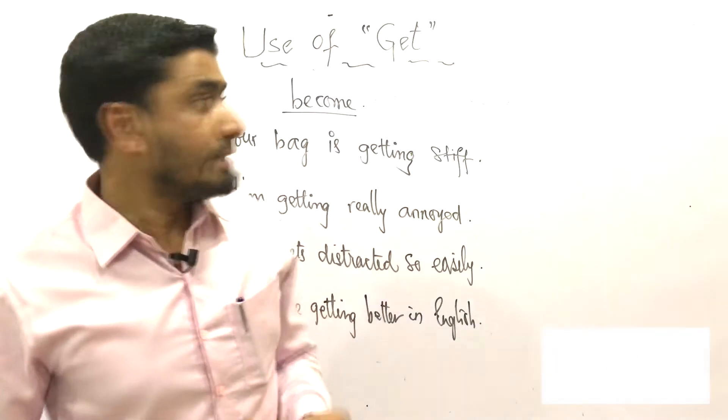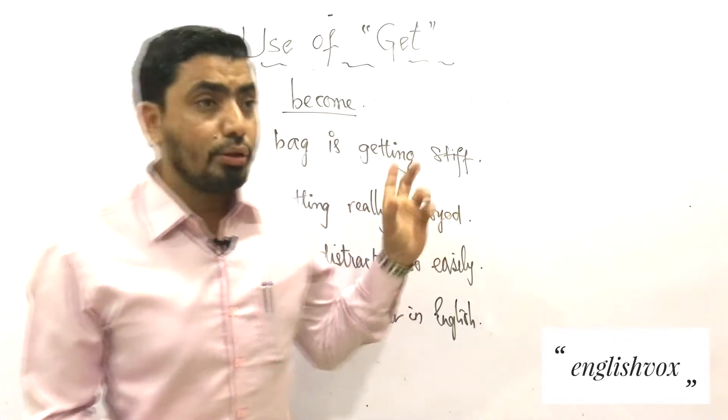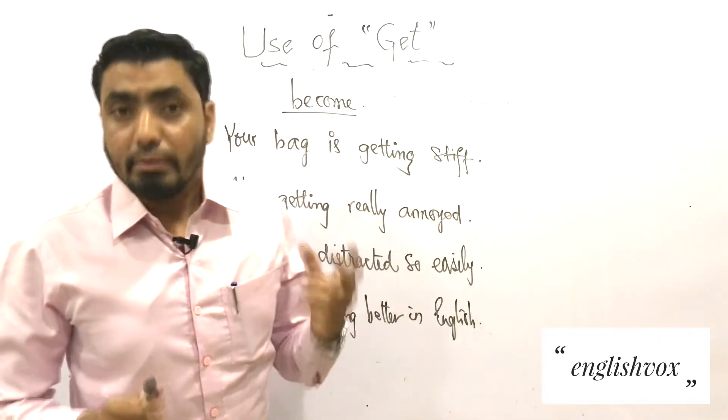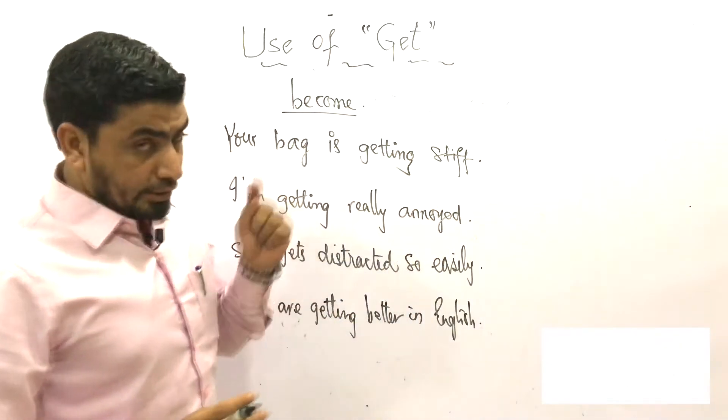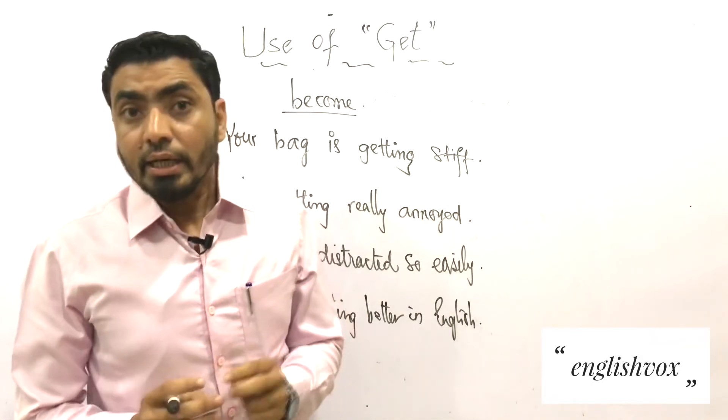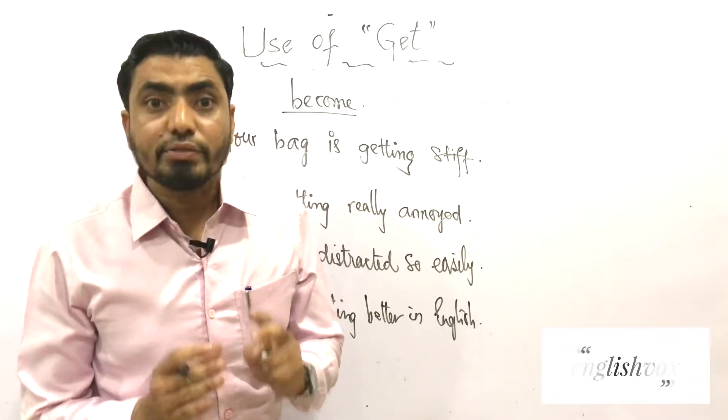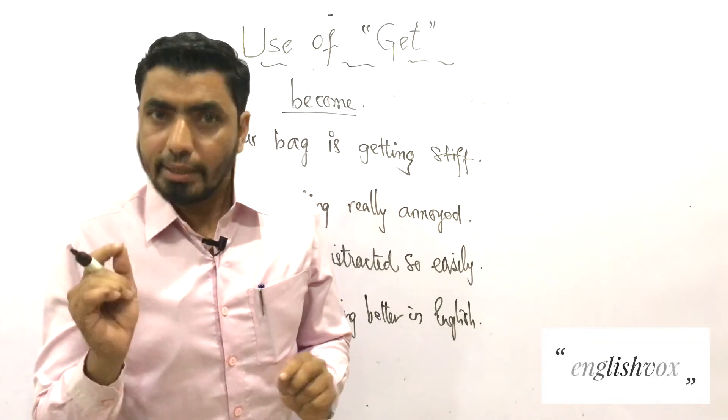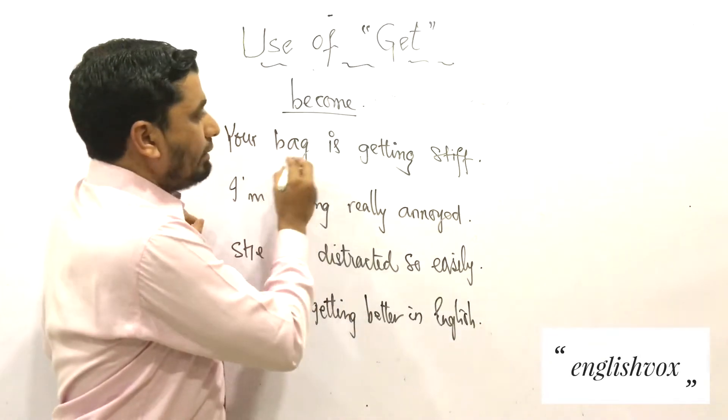Now the second use of 'get' says it is used to show 'become'. But you have to remember one thing: when it gives the meaning of 'become', it is followed by an adjective. Look here.